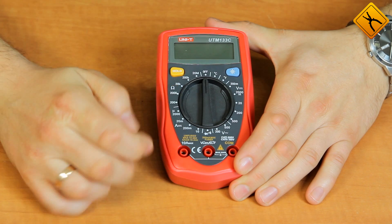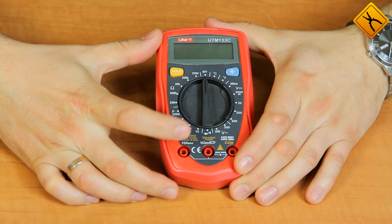There is a function of diode test and a continuity buzzer, direct current ampere.